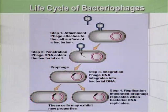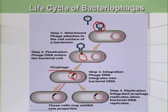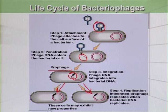The other cycle is the lysogenic cycle. Here we can see that the bacteriophage recognizes the bacterial cell and then injects its DNA. In the next step it incorporates into the bacterial DNA, existing there as a prophage. These cells may exhibit new properties because of this prophage.